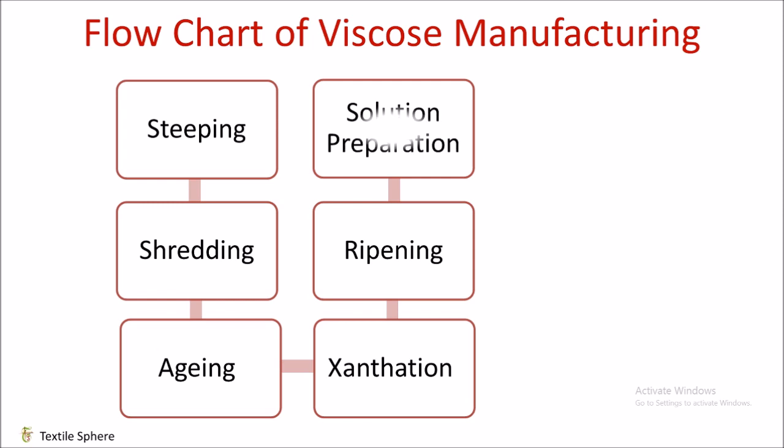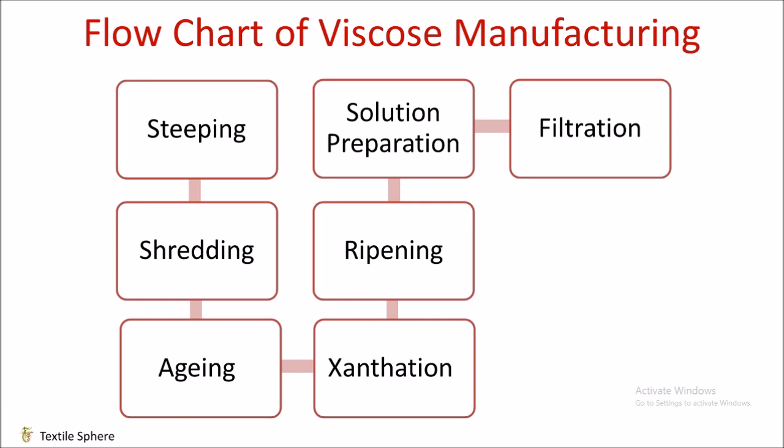Next is the Preparation of Spinning Solution. The spinning solution contains water, zinc sulfate, sodium sulfate, glucose and sulfuric acid. The sodium sulfate precipitates the dissolved sodium cellulose xanthate. The sulfuric acid converts xanthate into cellulose, carbon disulfide and sodium sulfate. The glucose provides softness and pliability to filaments, whereas zinc sulfate helps in adding strength. The viscose is then filtered to remove undissolved material that might disrupt the spinning process or cause defects in the rayon filament.